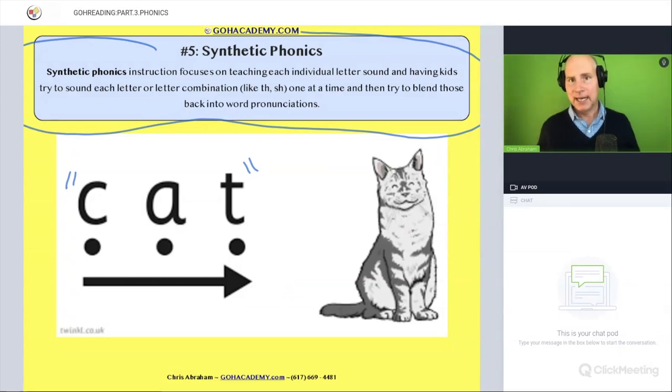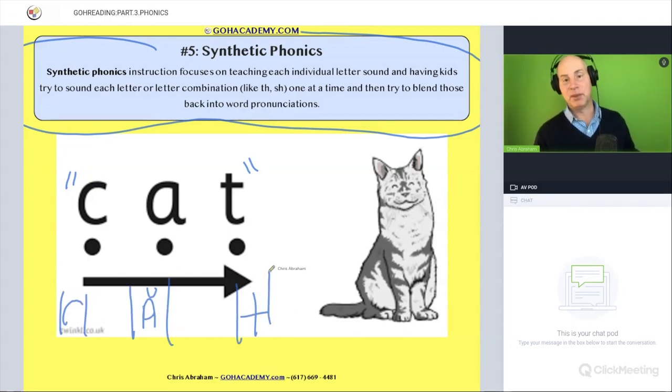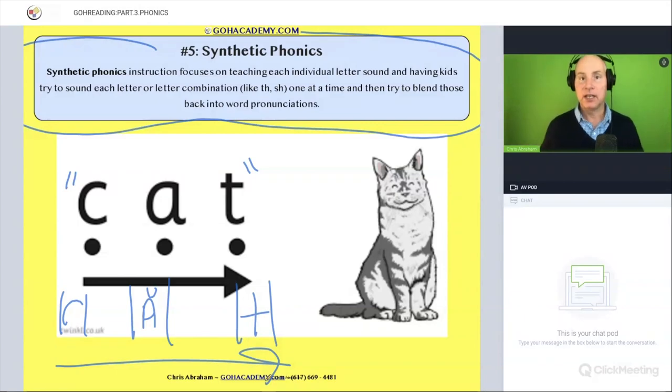So if a student comes to the word cat, they segment the sounds. I hear a k, an a, a t, and then they blend them together. Cat. That's not a, no such thing as a short key, just cat, right? So this is synthetic phonics: taking a word, segmenting it into its individual sounds, then blending it together.